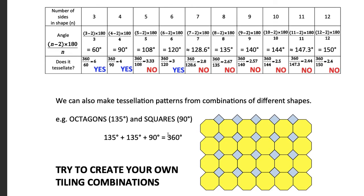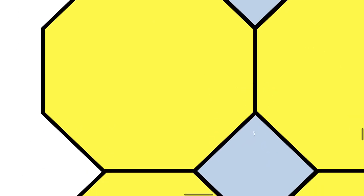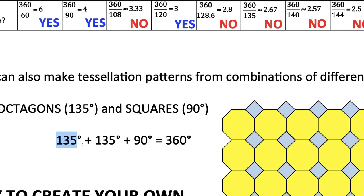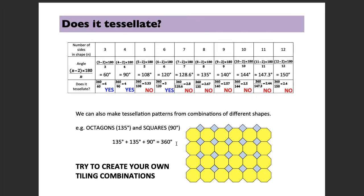However, you can make tessellation patterns using combinations of different shapes. For example, regular octagons paired with squares: two octagons contribute 135° + 135° = 270°, and a square adds 90°, giving exactly 360° around a point — so they fit together. You can try creating your own tiling combinations.